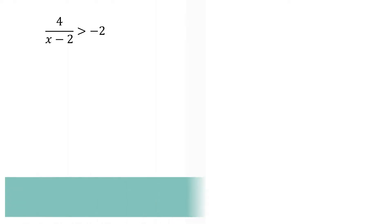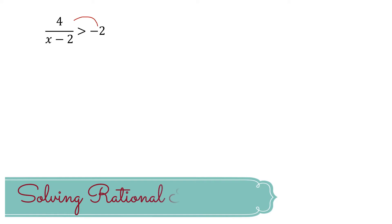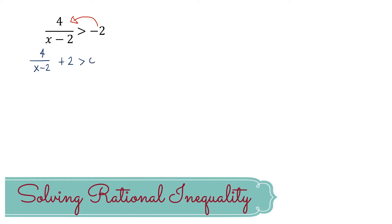Going back to the given, in order to satisfy the condition that what must be left on one side of the inequality is 0 only, we have to move this negative 2 to the other side. So what we get is 4 all over x minus 2 plus 2 is greater than 0.